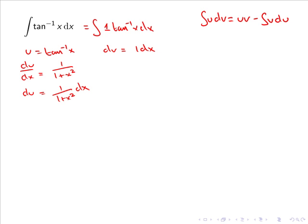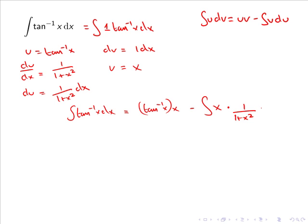Now we calculate v by integrating dv: v equals the integral of 1 dx, so v equals x. Applying the integration by parts formula, the integral of tan inverse x dx equals u times v, which is tan inverse x multiplied by x, minus the integral of v du, which is x multiplied by 1 over 1 plus x squared dx. Tidying this up, we have x tan inverse x minus the integral of x over 1 plus x squared dx.